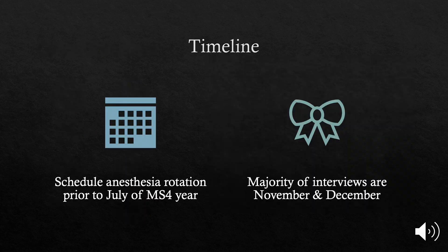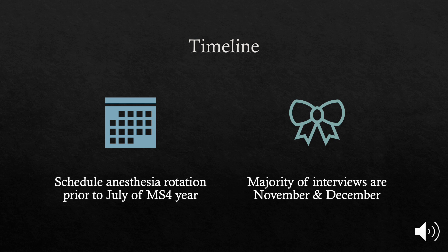Anesthesia follows the typical residency application timeline — no specific dates unique to anesthesia. It uses the ERAS application and the NRMP matching system. If you want to go into anesthesia, schedule your anesthesia rotation, preferably the four-week rotation, prior to July of your MS4 year. That way you confirm your interest and give letter writers plenty of time before letters of recommendation are due. The majority of interviews happen in November and December, with some in January, so those are the best months to keep free.